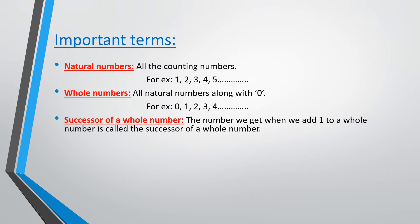What is the successor of a whole number? When we add 1 to a whole number, the number we get as the final result is the successor of that number. With an example, if we need to find the successor of 124, the number which comes right after 124 is 125. So 125 is the successor of 124.